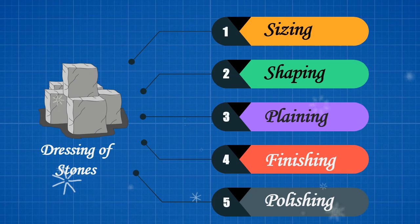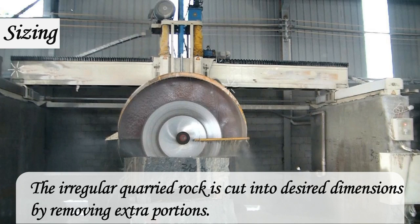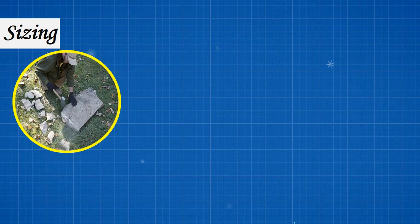Sizing: the irregular quarried rock is cut into desired dimensions by removing extra portions. It is generally done using hammers and chisels or cutting machines.